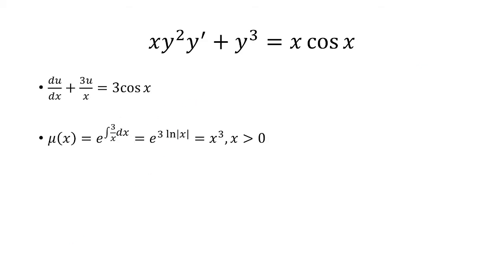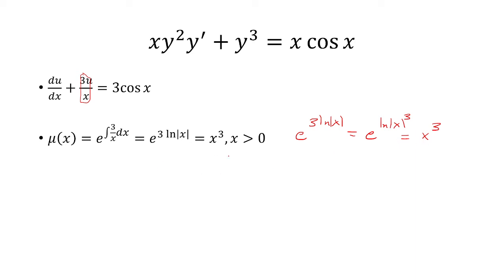We're going to introduce an integrating factor mu of x. Let that equal e to the integral of 3 over x dx — that's basically the coefficient of u. So that's going to be e to 3 ln of x, which can be rewritten as x cubed since the 3 goes into the exponent of x. Because x is positive, we can drop the absolute value, and this simplifies to x cubed.